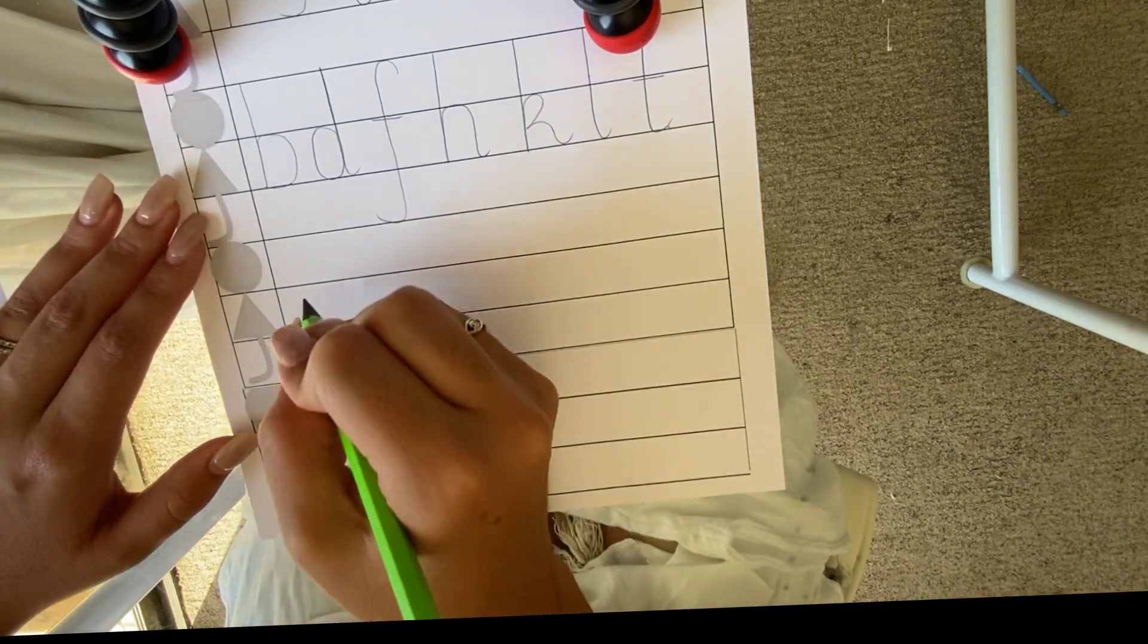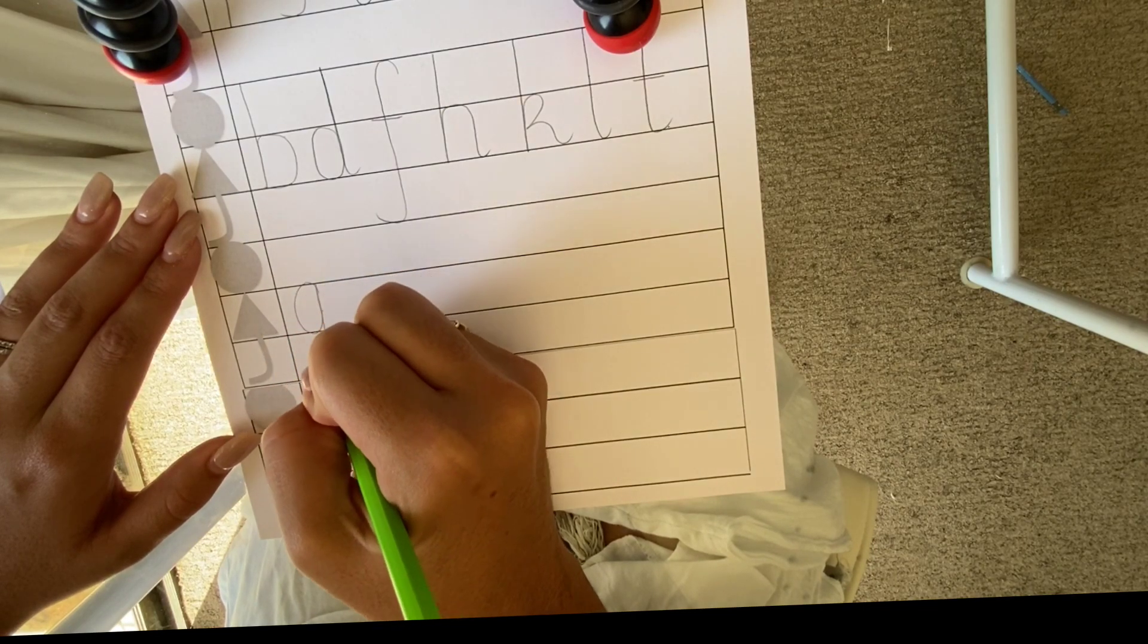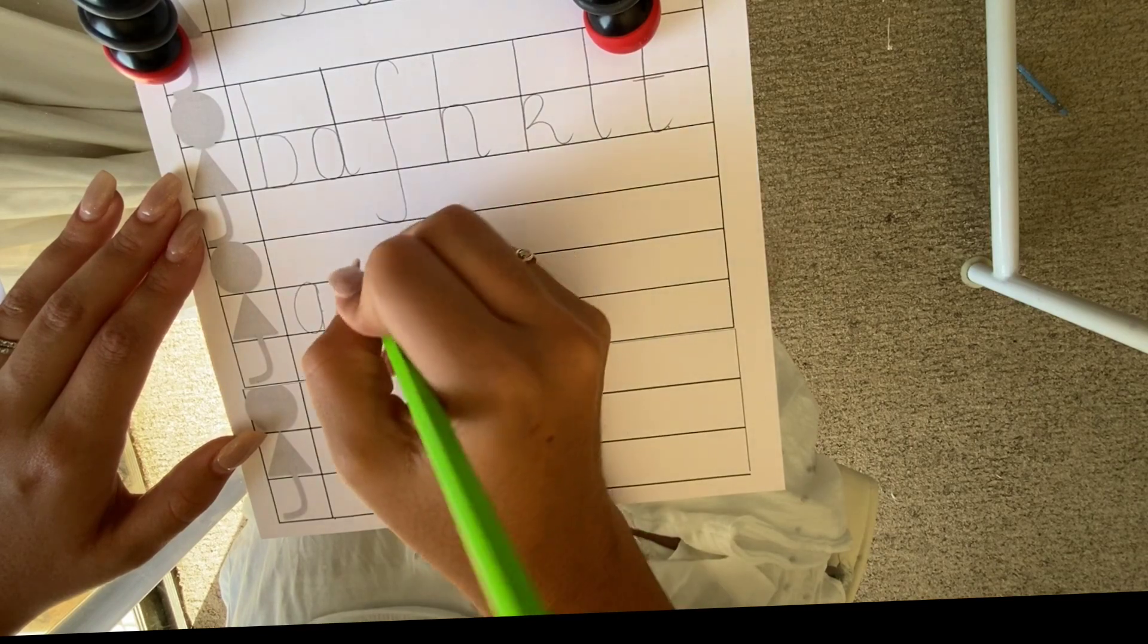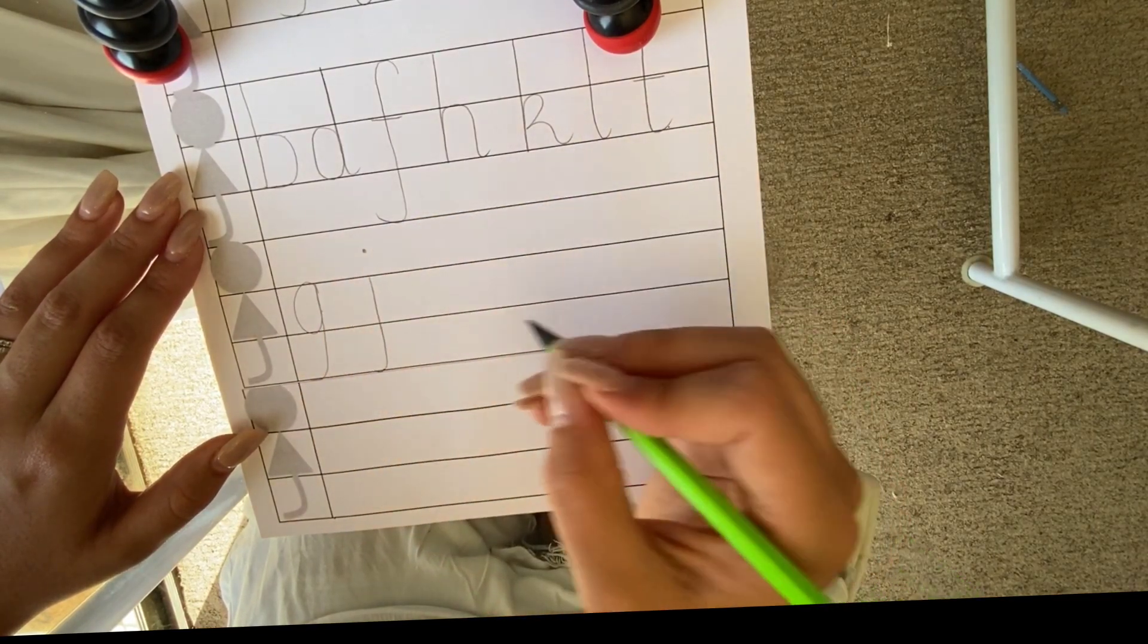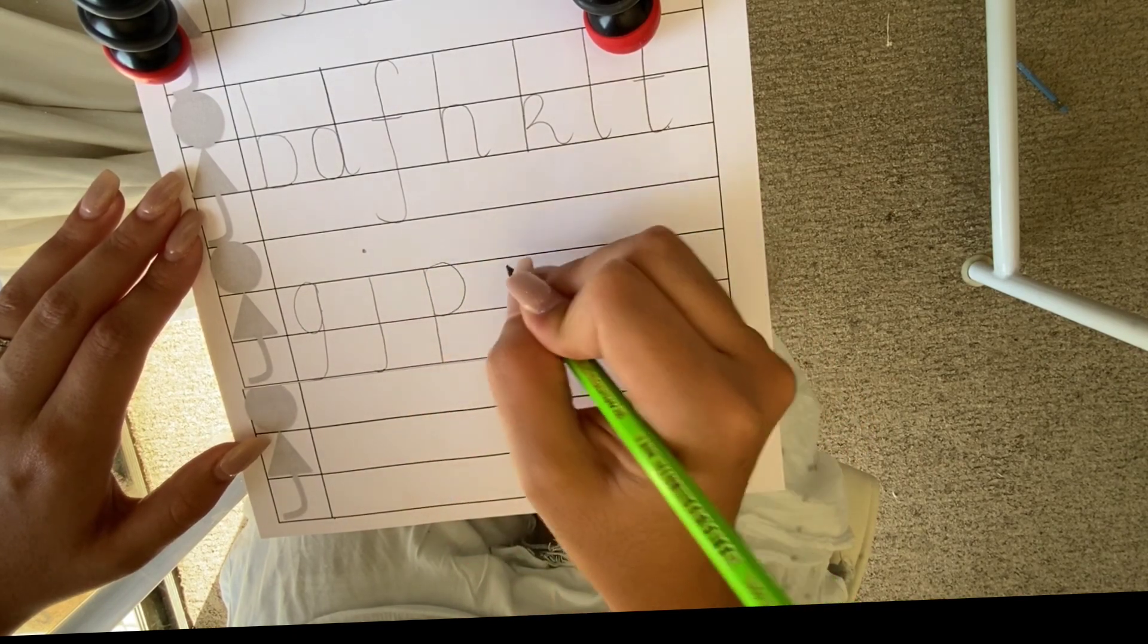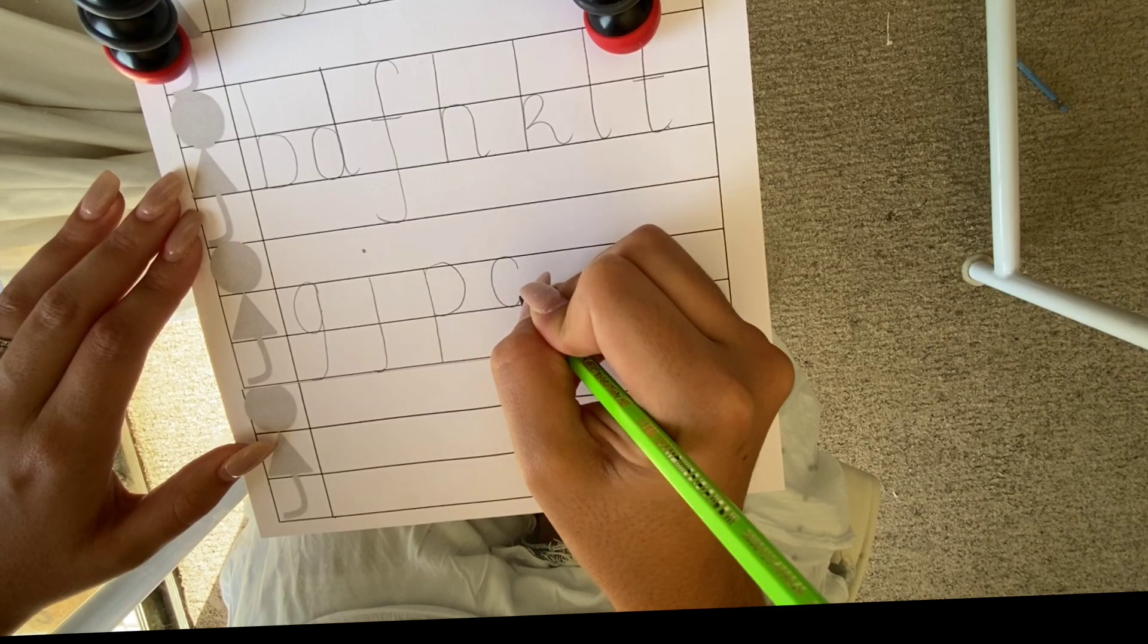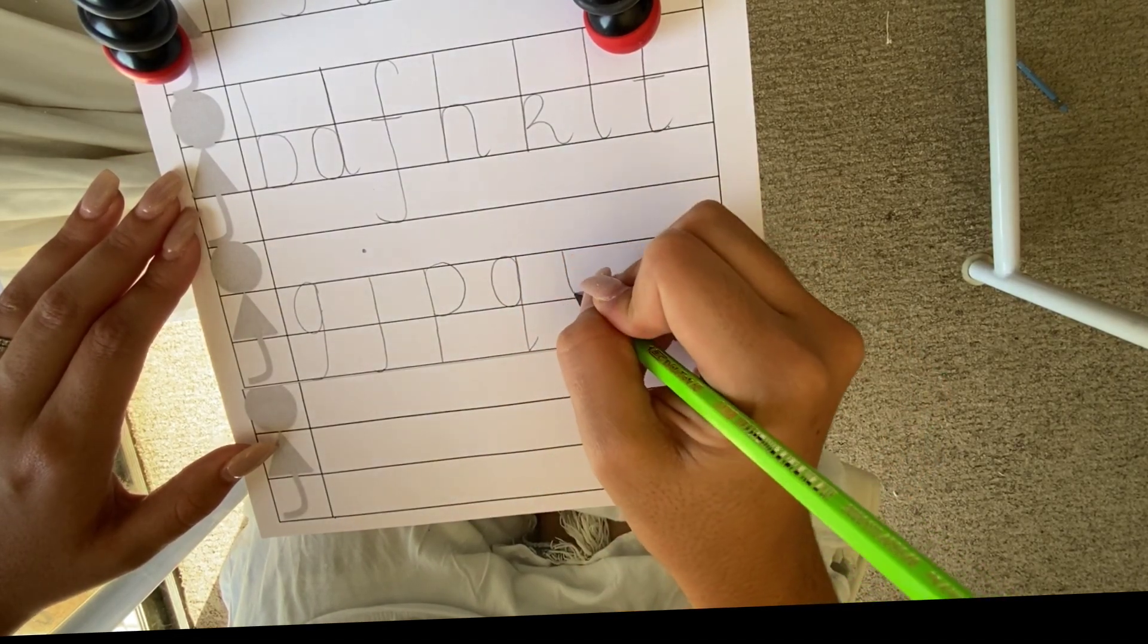These letters include G for Golden Girl, J for Jumping Jim, P for Peter Puppy, Q for Quarrelsome Queen, and Y for Yo-Yo Man.